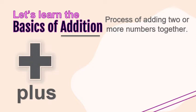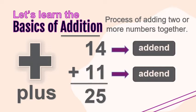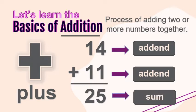For example, we have here 14 plus 11 equals 25. 14 and 11 are called addends. 14 is the first addend, and 11 is the second addend. When you add both of these addends, you will get the sum, which is 25. So, 25 is called the sum.